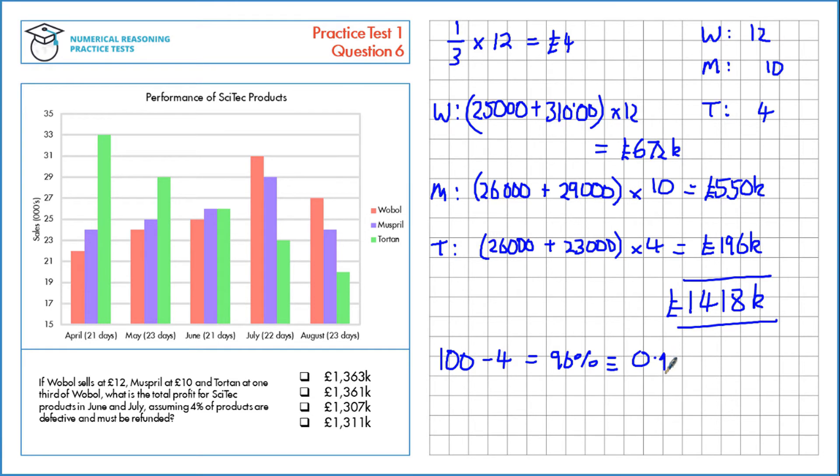That's a multiplier of 0.96, so we can multiply by that, which gives us approximately £1,361,000.